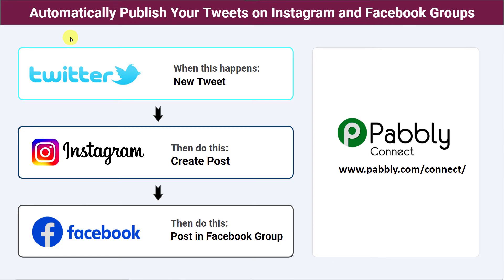Hello everyone. In this video we are going to learn how to automatically publish your tweets on Instagram and Facebook groups. Whenever a new tweet is created in the Twitter account, a new post should be created into the Instagram account as well as into the Facebook group. Doing this manually — taking tweet details, posting to Instagram and Facebook — is a time-consuming and tiresome process.